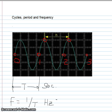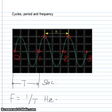In the above example, the period was one second, therefore the frequency equals one divided by one, which is equal to one hertz.